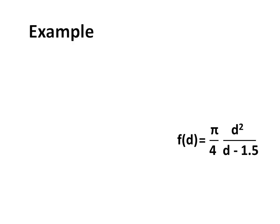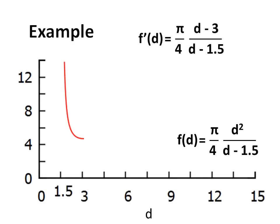In algebra, we learn functional analysis. The derivative tells us that this function has a negative slope between 1.5 and 3, and a positive slope for d larger than 3. We also learn limits, which tell us that the function goes to infinity, and we learn asymptotic behavior, which tells us that the curve looks like a line for large d.